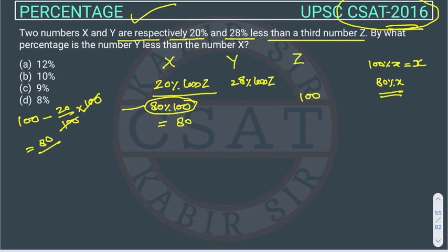Similarly, Y will come out to 72. How do we get this? 100 minus 28% - since Y is 28% less than Z - this 100 cancels that 100, so 100 minus 28 equals 72.